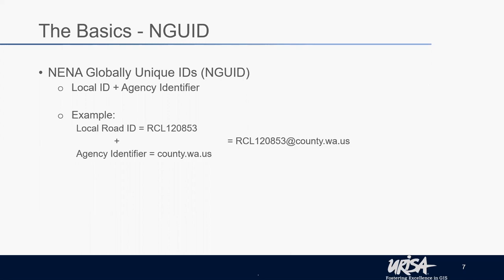To prevent any duplication of ID numbers, it has to be unique to you, and that agency identifier is often the key to making it unique. A helpful portion of the ID is the layer abbreviation — for your road centerline you could use RCL, for a site structure address point you could use SSAP, or for a PSAP layer you could use PSAP. So at a quick glance, you know exactly what layer is being referred to by the feature because you have that identifier right at the beginning. It's not required, but I've found it's very useful to identify the layer by using that abbreviation.